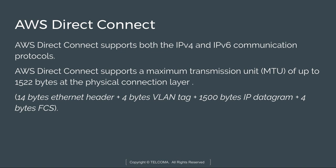AWS Direct Connect supports both IPv4 and IPv6 communication protocols. It supports a maximum transmission unit of 1522 bytes on a physical connection layer — that means 14 bytes Ethernet header, 4 bytes VLAN tag, plus 1500 bytes IP datagram, and 4 bytes FCS.